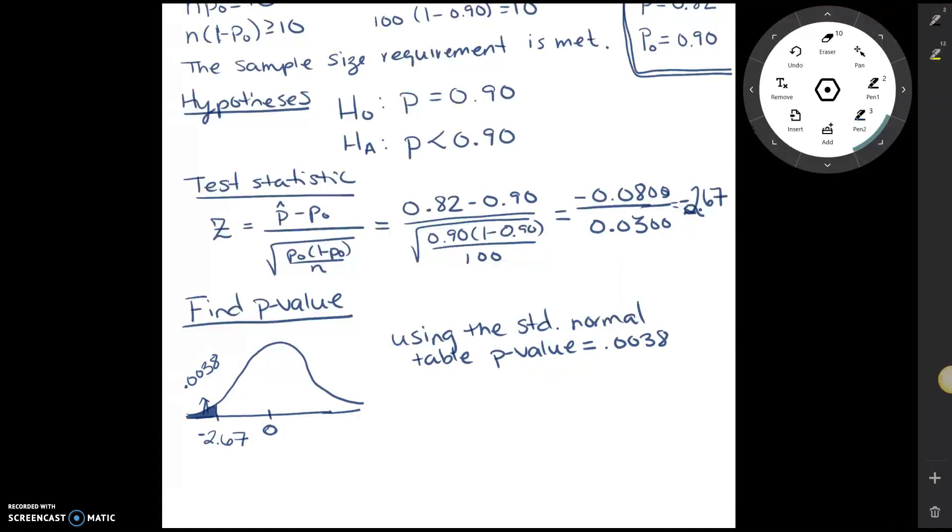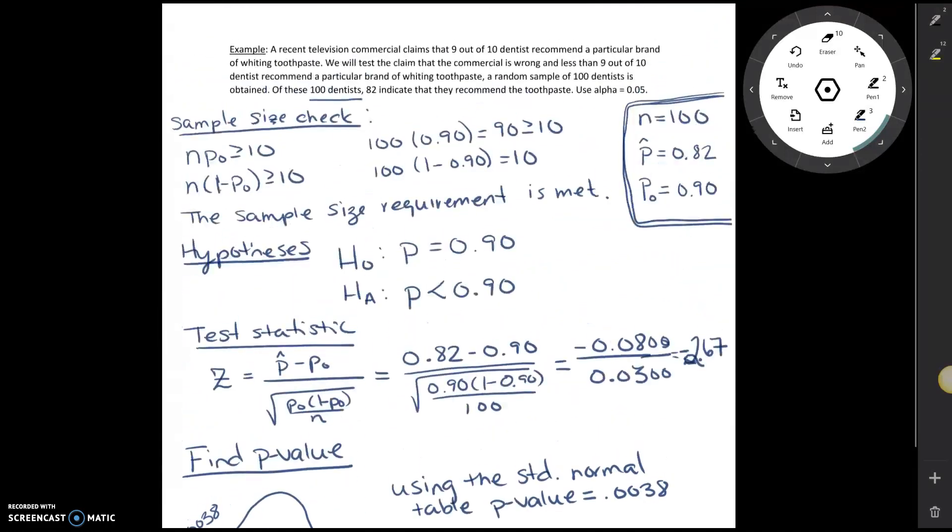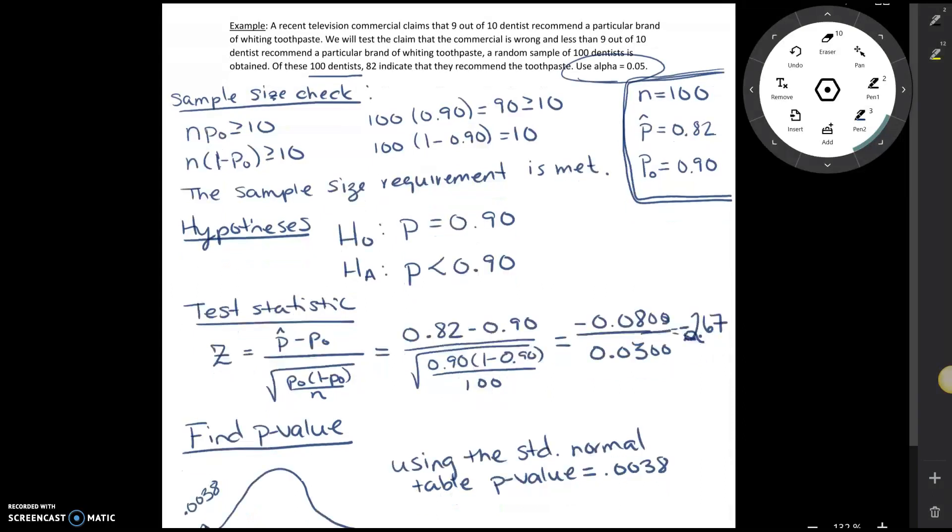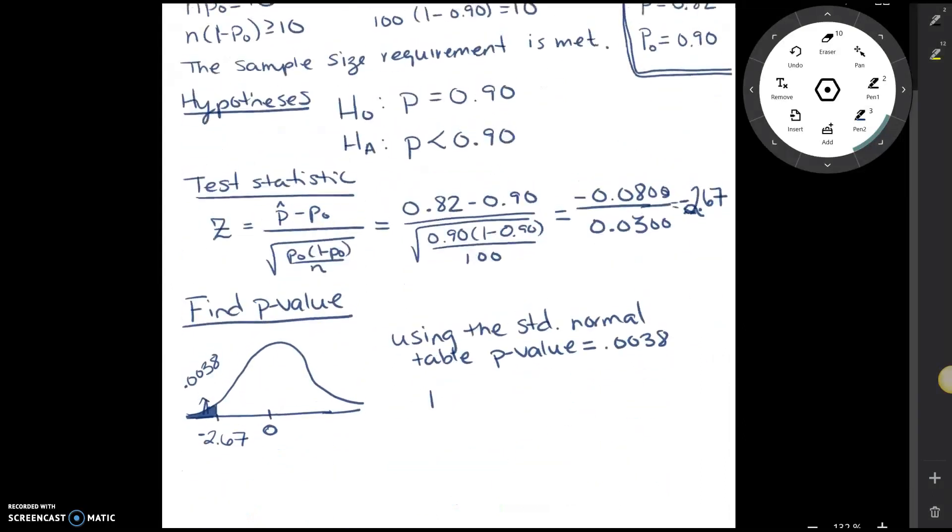Okay, now remember, all the way back up here at the top, we were going to use alpha of 0.05. So our p-value, which is equal to 0.0038, is less than alpha equals 0.05.